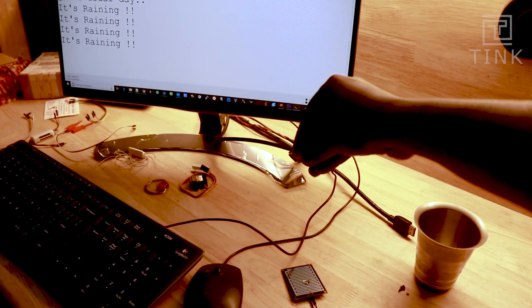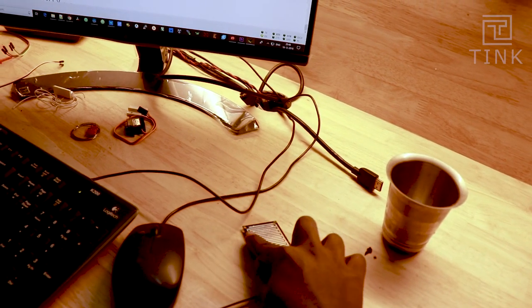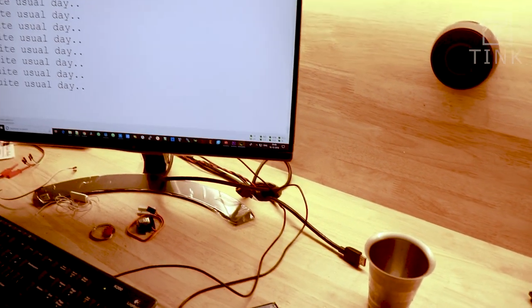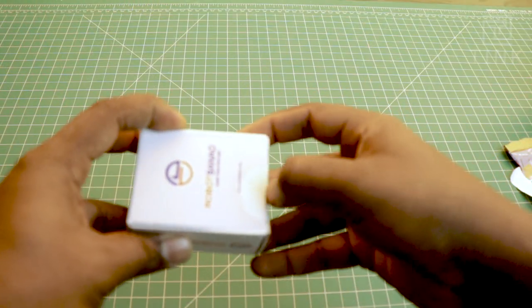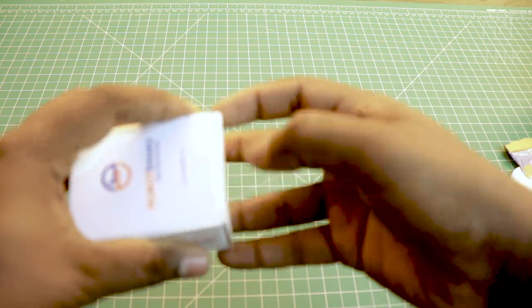There, it has detected the rain. Now once the water evaporates, the sensor will go back to its normal state. Next I had ordered a few items from robotbarnow.com. Let's see what's inside.